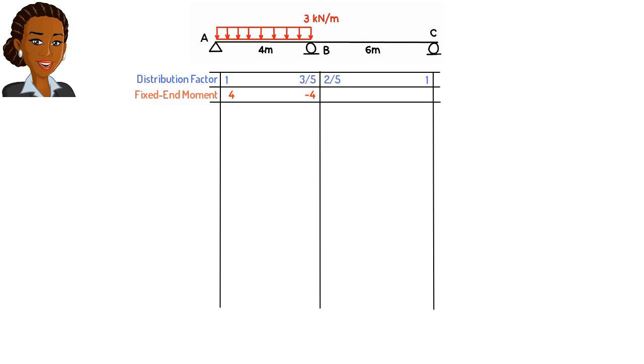We begin the process by balancing the existing moments at joints A and B. We add negative 4 to the left column. The value to be added to the second column equals 4 times 3 over 5, or 2.4. The value in the third column equals 4 times 2 over 5, or 1.6. Note that the sum of the moments at each joint is now 0. In the carryover step, we carry half of negative 4 to the second column, half of 2.4 to the first column, and half of 1.6 to the fourth column.